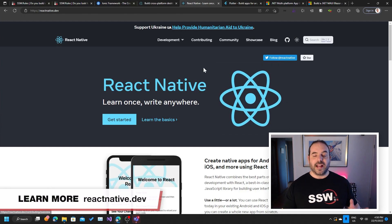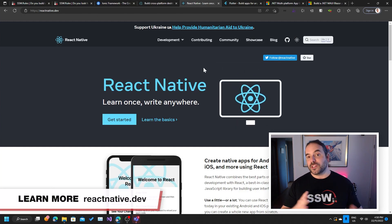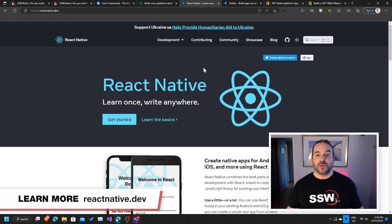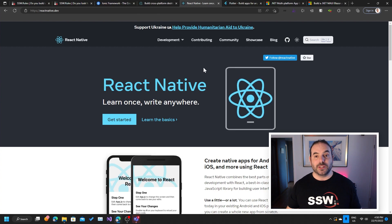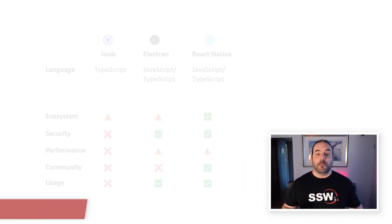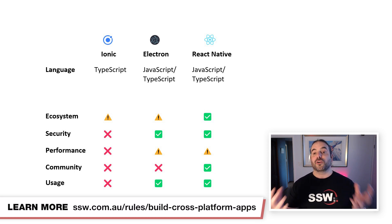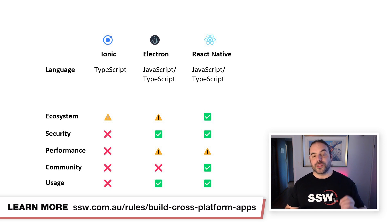The next step up is to look at something like React Native. If you're already a React team and you already have a React app, this will be a smooth transition. You can write your code and your UI in React, using JavaScript or TypeScript. It has a major advantage over Ionic or Electron — React Native is a cross-compiler, so rather than running in a web view, it actually builds an executable native application that runs on the native platform APIs.